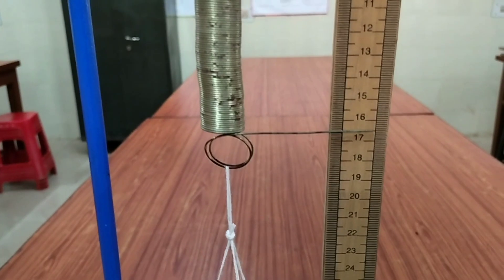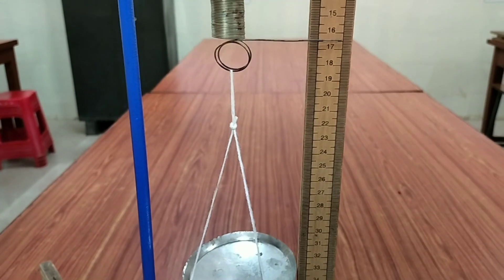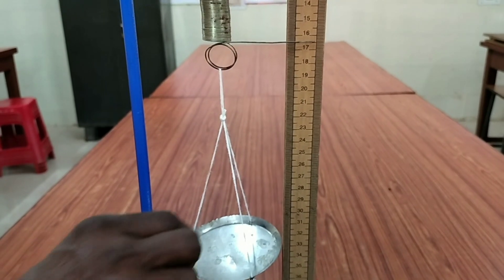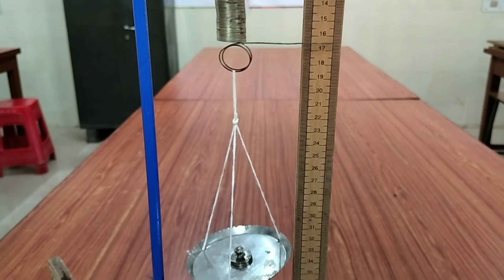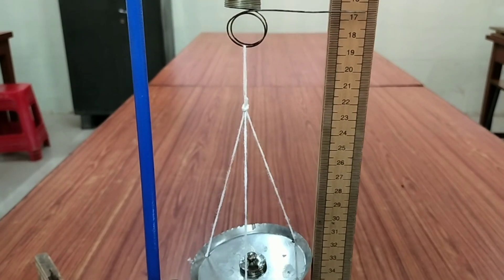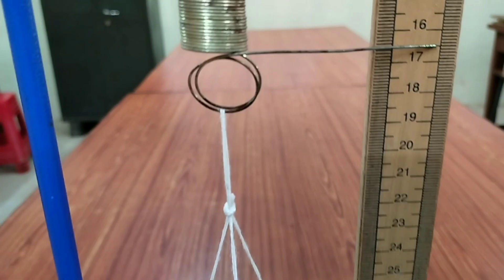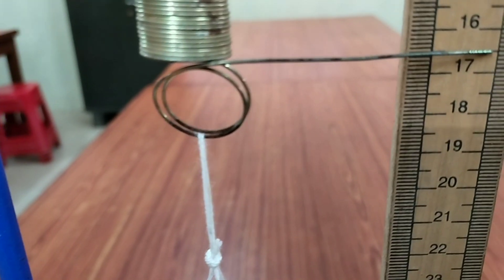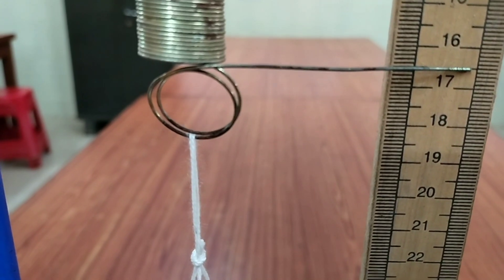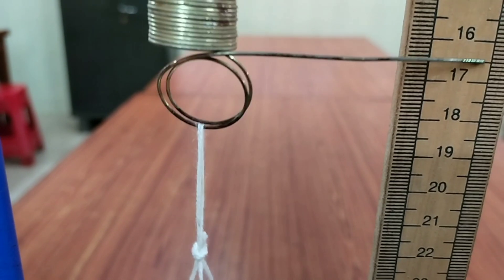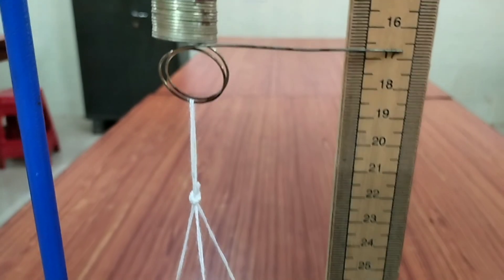First you record the reading where there is no weight in the pan. I have given here a mass of 10 gram and you find out what is the change in length or extension. From this reading, you can use a telescope to see the extension on the scale.